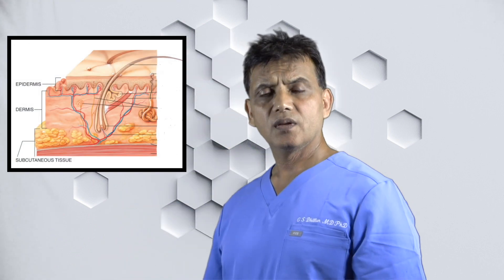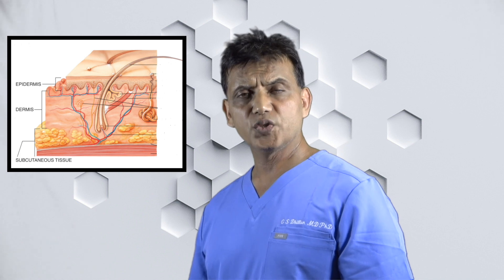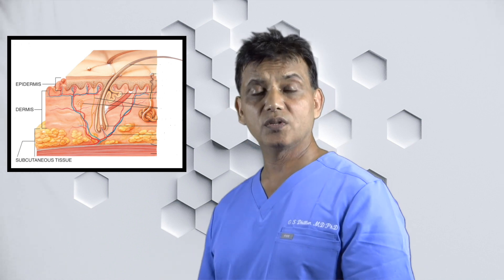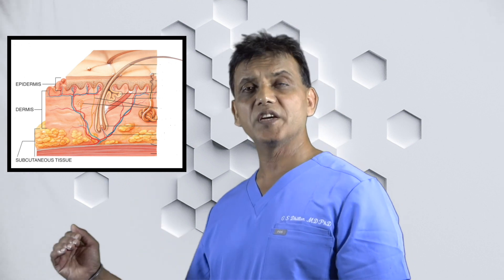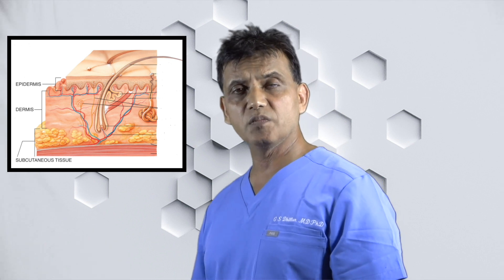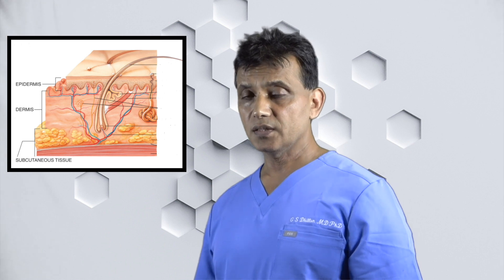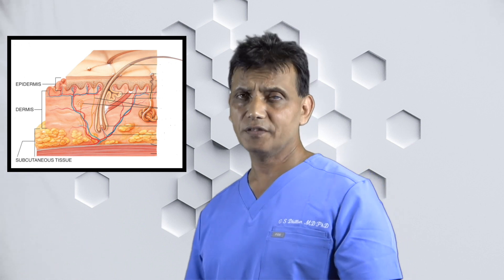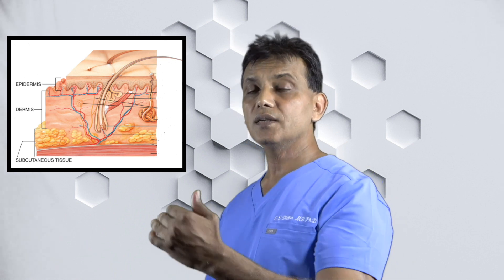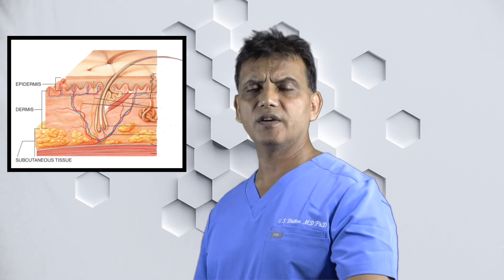Let's look at the rationale behind pressure ulcer staging. One has to understand the different layers of soft tissues covering the bony skeleton. This is a cross section of the skin and underlying tissues. Skin is an organ composed of different tissues. The first layer is the epidermis, the next layer is the dermis. Underneath the skin is the hypodermis — the subcutaneous or fatty layer. Underneath the fatty layer is the muscular layer, covered with a thin layer of fascia.